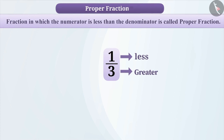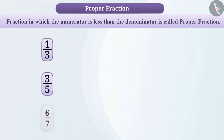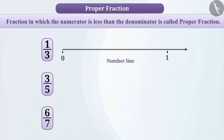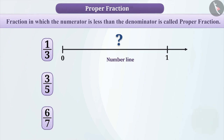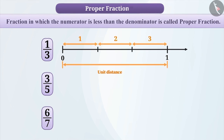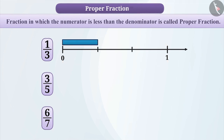Similar to 1 by 3, there are some other fractions like 3 by 5, 6 by 7, etc. Let's represent them on the number line. To represent 1 by 3 on the number line, we will divide the unit length into three equal parts and take one part of it as 1 by 3.